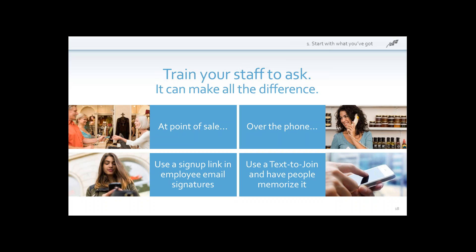Train staff to ask over the phone at the close of a call if they have a happy customer who would like to join their email club for exclusive content or coupons. Don't forget to add your online sign-up form URL to email signature lines — every employee could definitely have that added as a hyperlink in their email signature. And have people in your company memorize the text-to-join feature. It's a terrific, easy feature — you set up a text-to-join keyword associated with your company, and get people to memorize that keyword and the phone number.